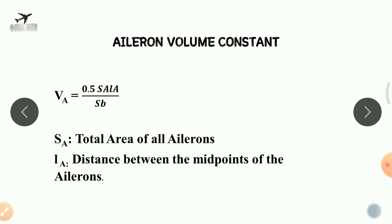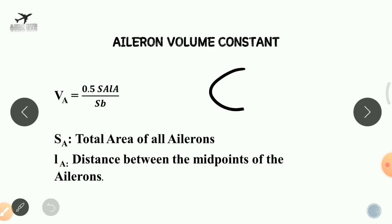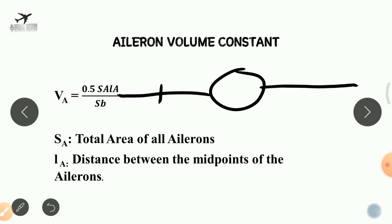An aircraft has two ailerons — inboard and outboard. In the front view, we can imagine one aileron midpoint on each side. The distance between these two midpoints is called LA. To repeat: LA is the distance between the midpoint of one aileron and the midpoint of the other aileron.